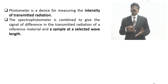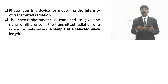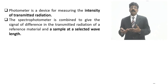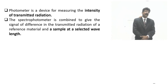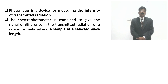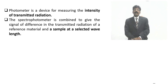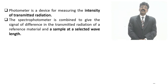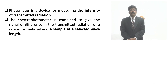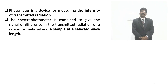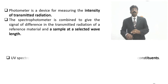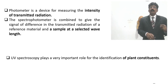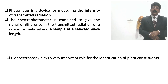The spectrophotometer is an optical device; the photometer is a detecting device of transmitted light. Photons collected by anodes in the cathode are converted into an electrical reading representing substance concentration. The spectrophotometer gives the signal of difference in transmitted radiation of a reference material and sample at a selected wavelength. UV spectroscopy plays a very important role in identifying plant constituents.